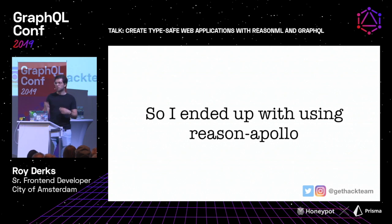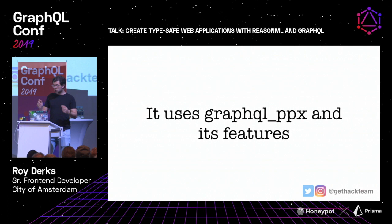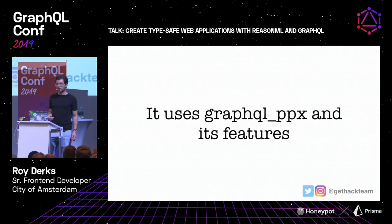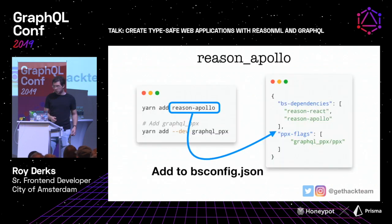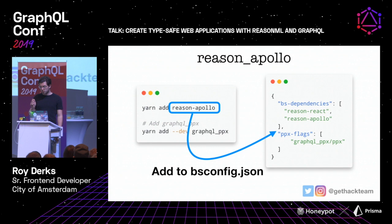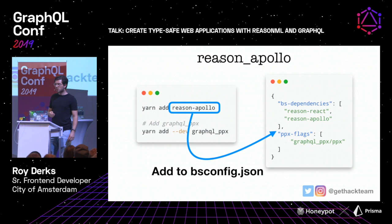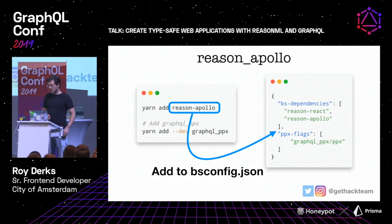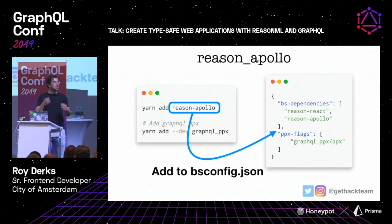So I ended up using Reason Apollo, which already contains a lot of that boilerplate code. I threw away my manual implementation and used Reason Apollo because it's easier to show what it's actually about. Reason Apollo uses GraphQL PPX, so the introspection query and query language support is already in there. To install it, you can just use Yarn or NPM — it's really convenient. The only manual step is adding it to your bsconfig BS dependencies. And as you can see with the PPX flags, we still have GraphQL PPX in there, so you can still use GraphQL query language inside your Reason application.